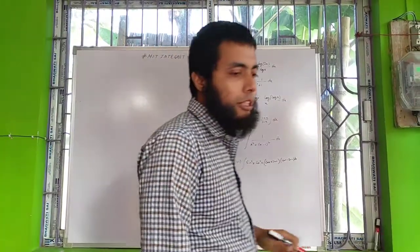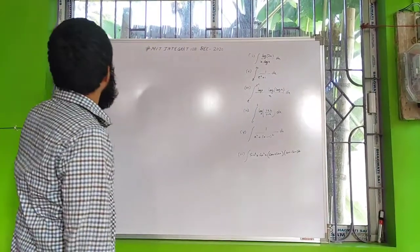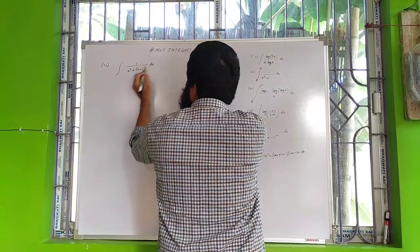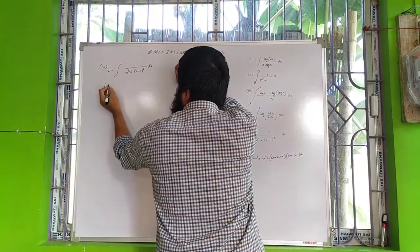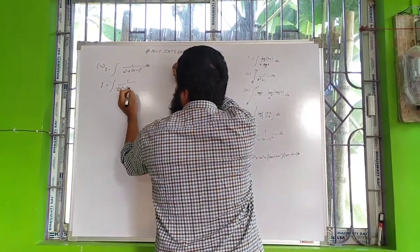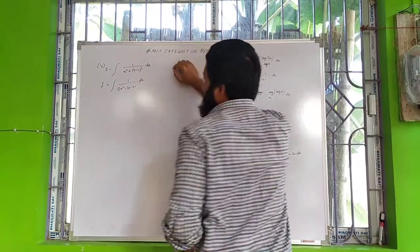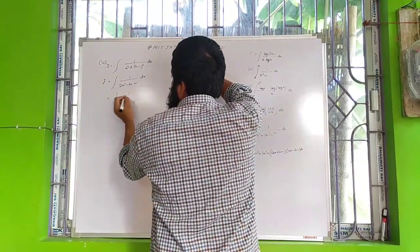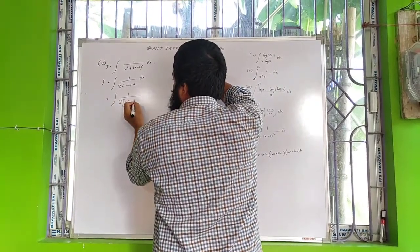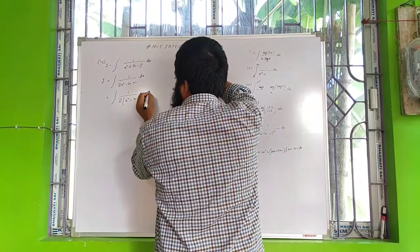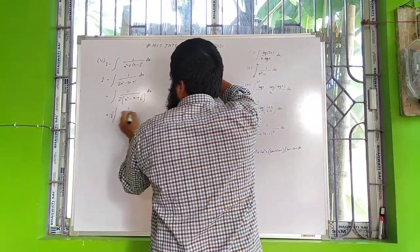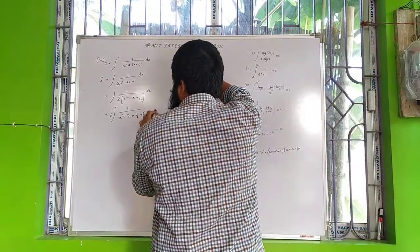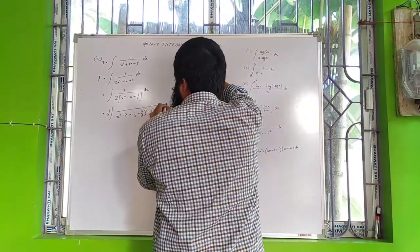Now we come to the last problem in this video — we will do 5 problems only. The last problem is: integration of 1/(x² + x − 1)² dx. I can expand (x + x − 1)² as 2x² − 2x + 1, so the integrand is 1/(2x² − 2x + 1) dx. Taking 2 outside: (1/2) · integral of 1/(x² − x + 1/2) dx. Completing the square: x² − 2·x·(1/2) + (1/2)² − (1/2)² + 1/2, which gives (x − 1/2)² + 1/4 = (x − 1/2)² + (1/2)².